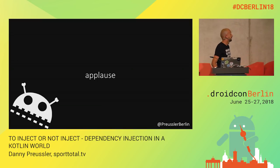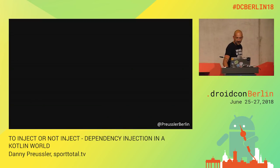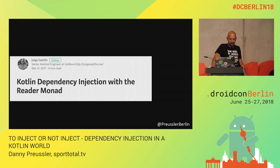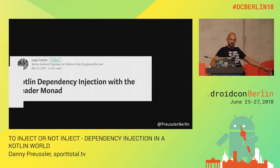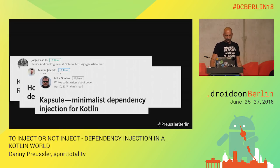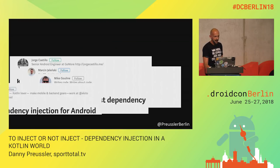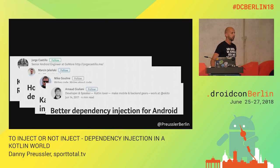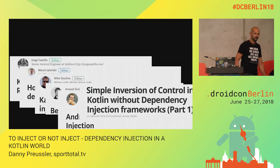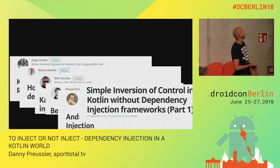When I wanted to give this talk, basically every week I saw an article like this: 'Do Kotlin dependency injection with a Vida Monad,' 'How to reproduce Dagger with Kotlin,' 'Here's a new framework called Capsule,' 'Here's a new framework called Koin,' 'Here's a new framework called Codein,' and so on. So something was definitely happening.